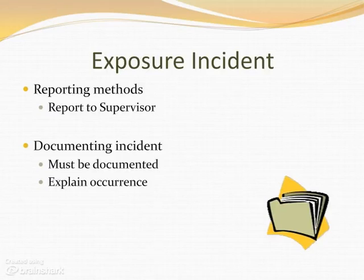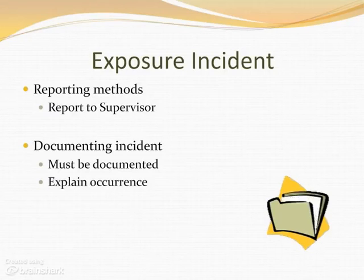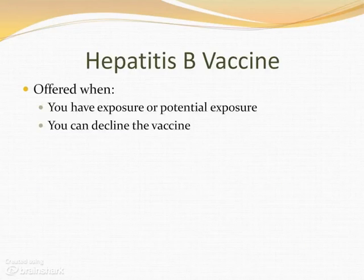On the exposure report, you must explain what part of the body was exposed, the method of decontamination used, what body fluids were involved, the route of exposure, and if known the identity of the source individual. You must also describe what personal protective equipment you were wearing and if it failed, how and why. Incident reports and other records are kept strictly confidential. If there is an exposure incident, hepatitis B shots are offered. You can decline the vaccine, but if you do refuse, the vaccine can be given at a later date. This vaccine has proven to be safe and effective in preventing infection.